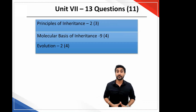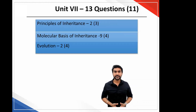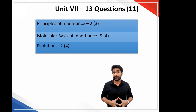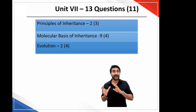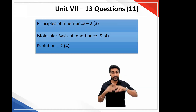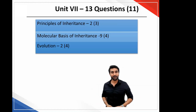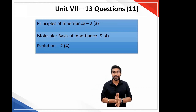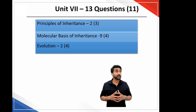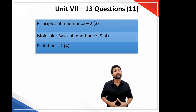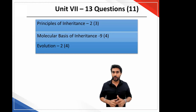Unit seven had 13 questions — this is an important unit covering genetics, including principles of inheritance and molecular basis of inheritance. As I mentioned earlier, molecular basis of inheritance was unevenly distributed, with 9 questions from this chapter — half asked in botany and half in zoology. In my opinion, this is not a correct distribution and I don't expect it to be repeated next year. Evolution is a considerably important chapter — last year they asked 4 questions, but this year only 2 were asked, which is not on expected lines.